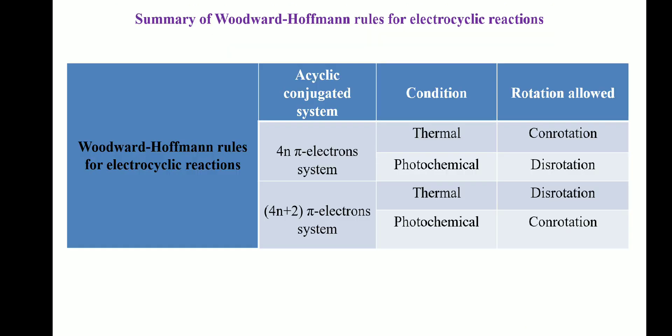Based on these discussions, we can summarize the Woodward-Hoffmann rule for electrocyclic reactions. For an acyclic conjugated system with 4N pi electrons, the allowed rotation is conrotation under thermal conditions and disrotation under photochemical conditions. For an acyclic conjugated system with 4N+2 pi electrons, the allowed rotation is disrotation under thermal conditions and conrotation under photochemical conditions.